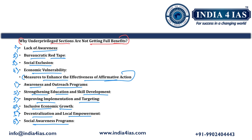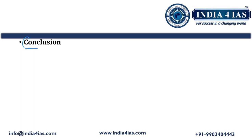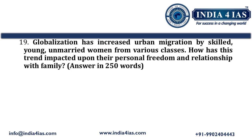Conclusion for question 18: despite comprehensive constitutional provisions and affirmative action policies, the full benefits have not yet reached underprivileged sections of society due to systemic barriers, social discrimination, poor policy implementation and ineffective targeting.